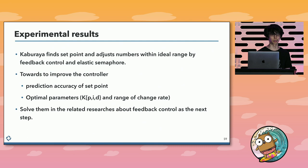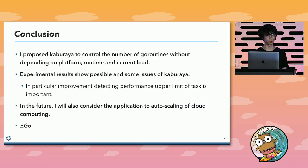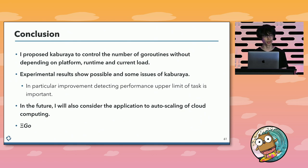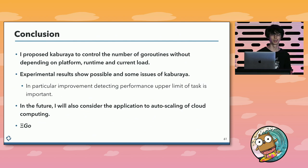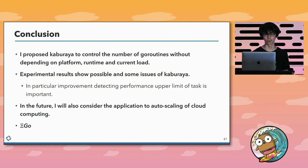This is the conclusion. I proposed Kabu-Laya to control the number of goroutines without depending on the platform, runtime, and current load. Experimental results show the possibilities and some issues of Kabu-Laya. In particular, improvement in detecting the performance upper limit of the task is important. In the future, I will also consider the application of this approach to autoscaling of cloud computing.